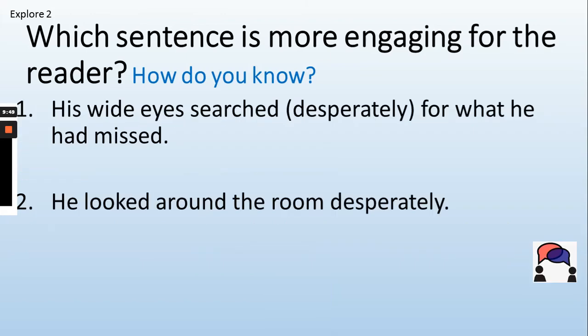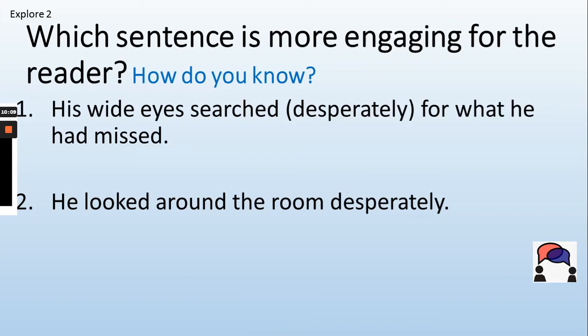Let's have another look. 'His wide eyes searched desperately for what he had missed.' Number two: 'He looked around the room desperately.' Pause the video and choose which one uses parenthesis in an engaging way for the reader. Both sentences used 'desperately,' but the first example uses a pair of brackets — this is parenthesis. You might want to write down this as an example.